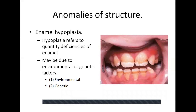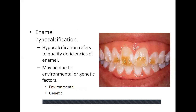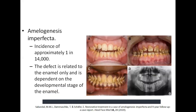Enamel hypocalcification refers to quality deficiencies of the enamel and may be due to environmental or genetic factors. Environmental factors are the same as those for hypoplasia. Genetic factors include amelogenesis imperfecta — the hypocalcified type — which has normal thickness of enamel but is poorly calcified and fractures very easily. Amelogenesis imperfecta has an incidence of approximately 1 in 14,000, affects enamel only, and is dependent on the developmental stage. There is normal pulpal and root morphology. Treatment depends on type and severity; severe cases may require full coverage restorations or veneers.